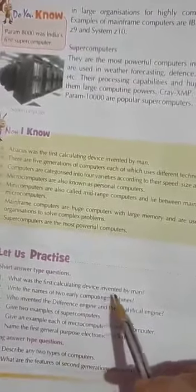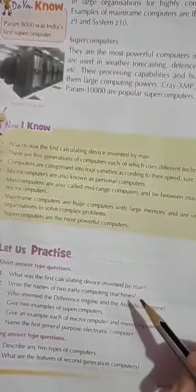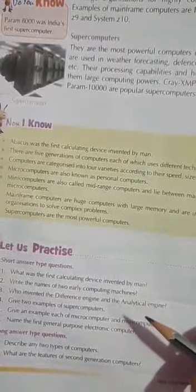What was the first calculating device invented by man? Abacus. Abacus was the first calculating device invented by man.